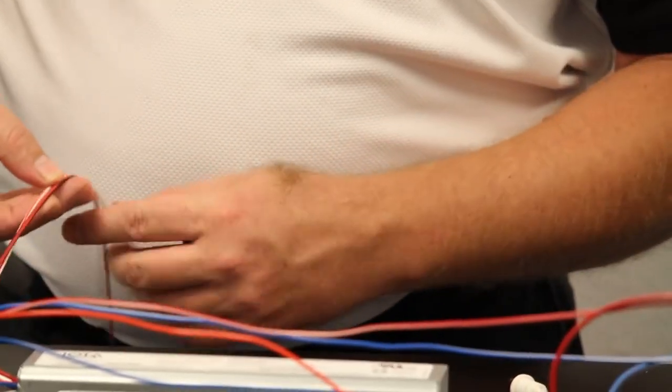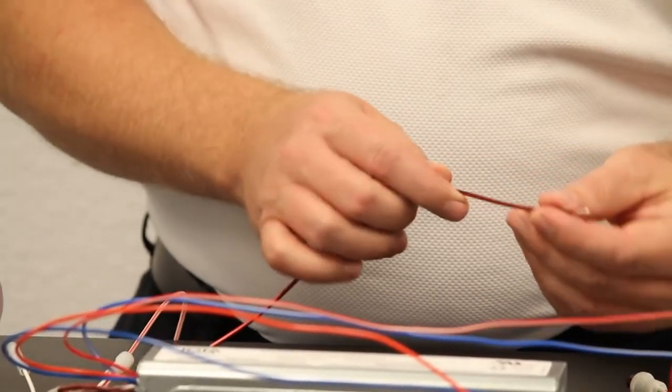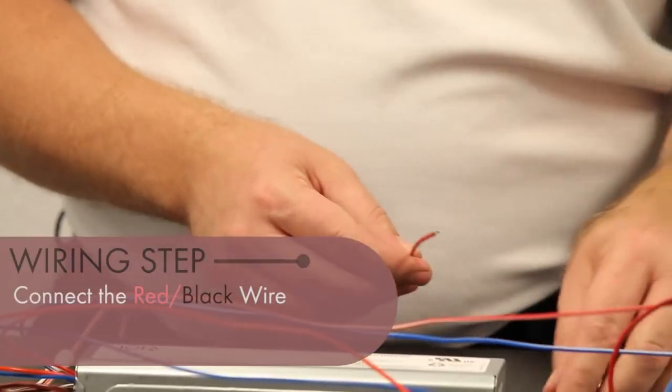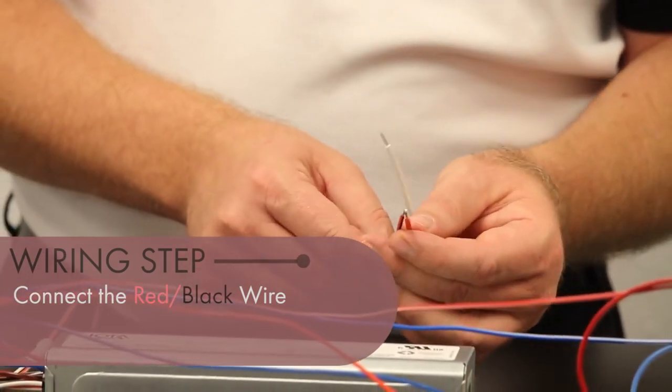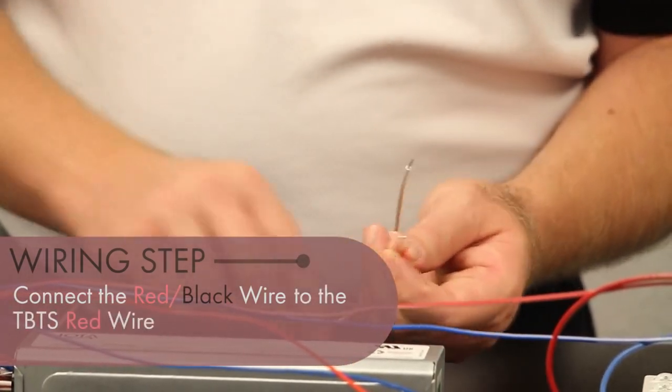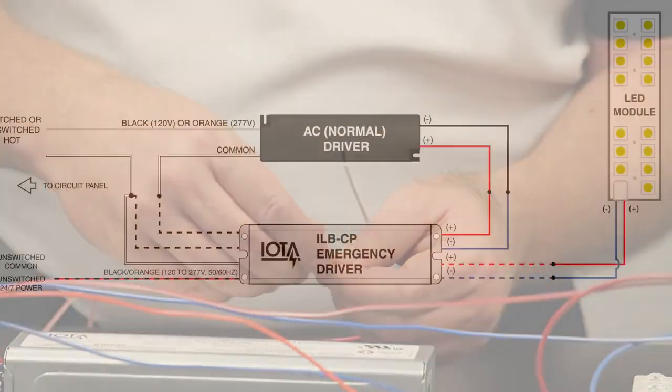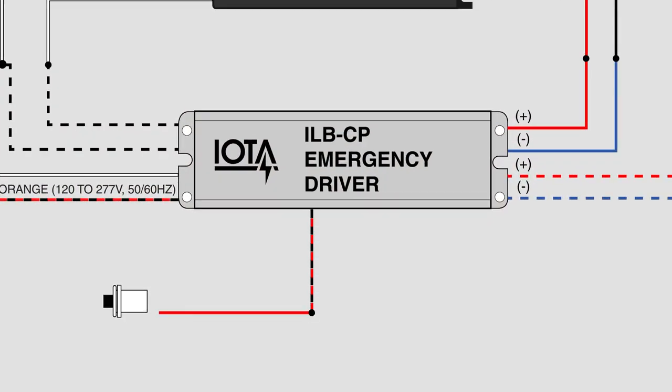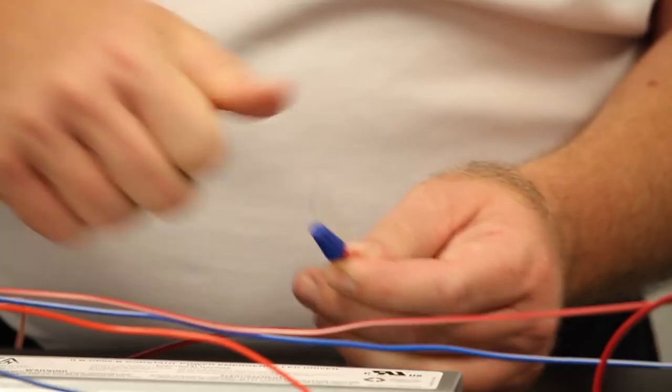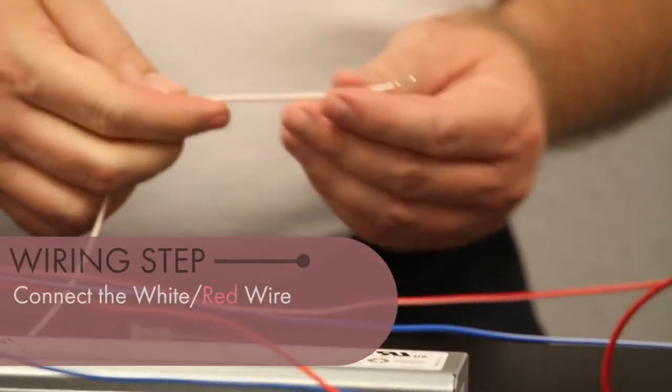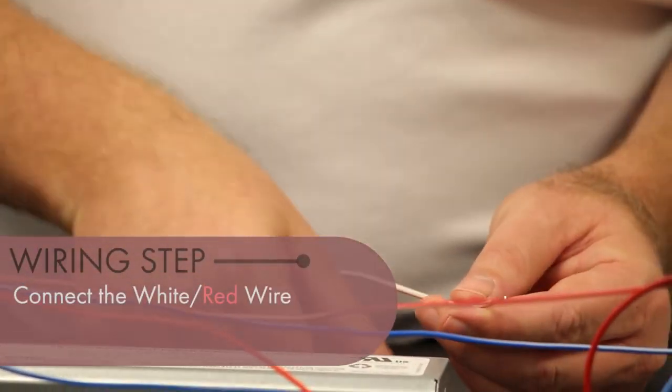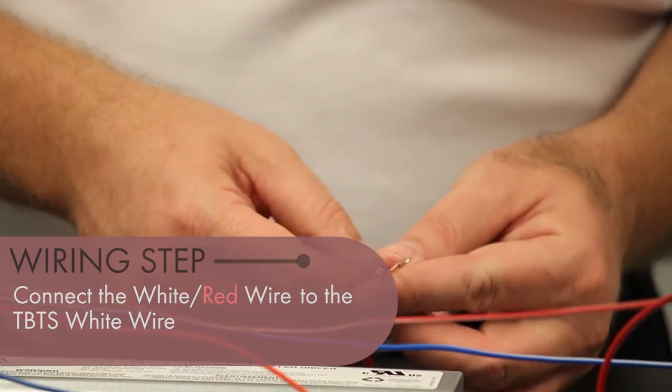The first connection we want to make will be the red wire with the black trace, which will connect to the red wire of the test button. Next, the white wire with the red trace will connect to the white wire of the test button.